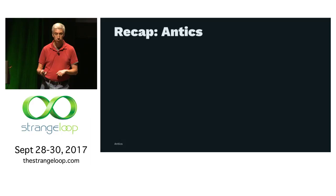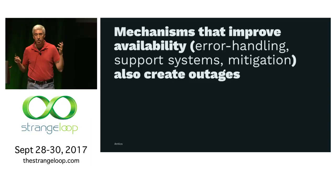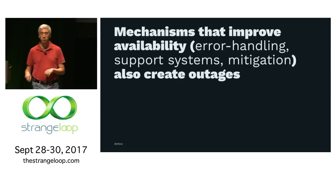To recap the antics part: we have to use mechanisms to improve availability — we have no choice. Things like error handling, support systems, and mitigation. But those things can also cause new problems, and that's what's so hard about building reliable systems.